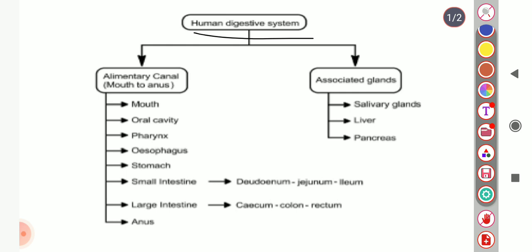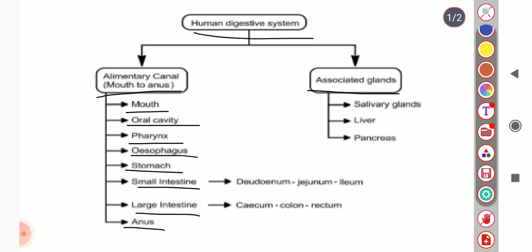The human digestive system consists of two main components: the alimentary canal and associated glands. The alimentary canal is further divided into the mouth, oral cavity, pharynx, esophagus, stomach, small intestine, large intestine, and anus. The small intestine consists of three parts: duodenum, jejunum, and ileum. The large intestine consists of the caecum, colon, and rectum.